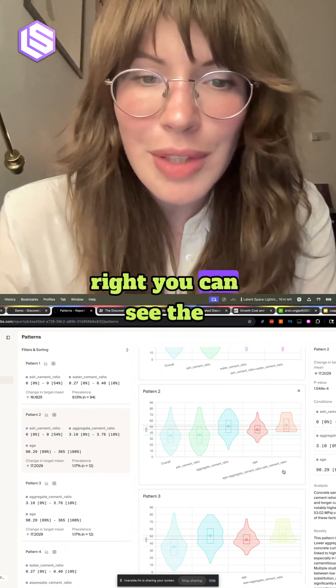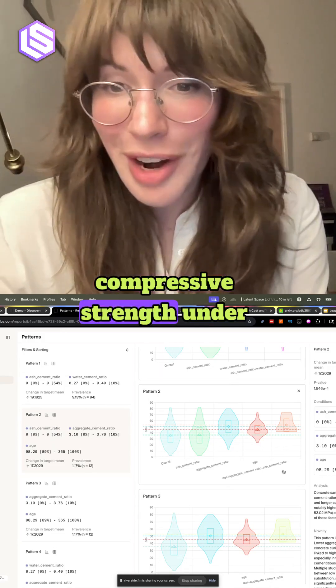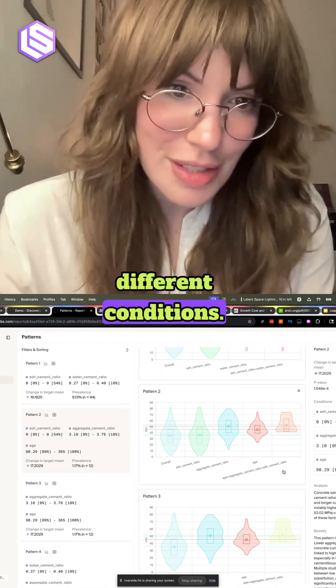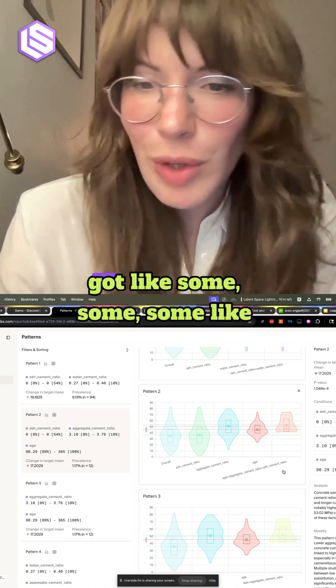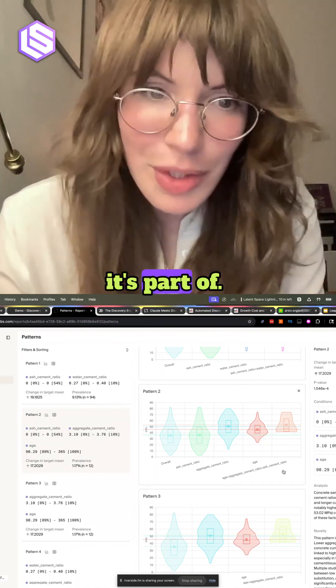The violins on the right, you can see the distribution of concrete compressive strength under different conditions. And so for each condition, you've got some range or some category that it's part of.